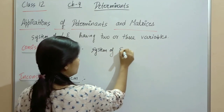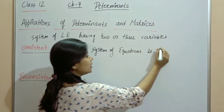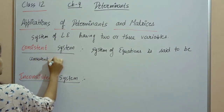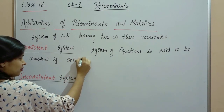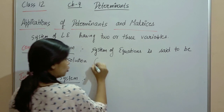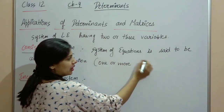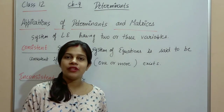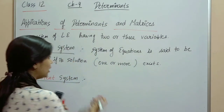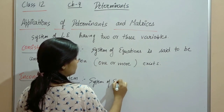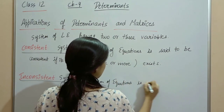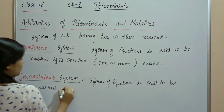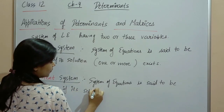A system of equations is said to be consistent if its solution exists — solution one bhi ho sakta hai aur more, infinite bhi ho sakta hai. Usse hum consistent system kehte hain. Aur inconsistent system means woh system of linear equations jis mein solution exist hi nahi karta. System of equations is said to be inconsistent if its solution doesn't exist.